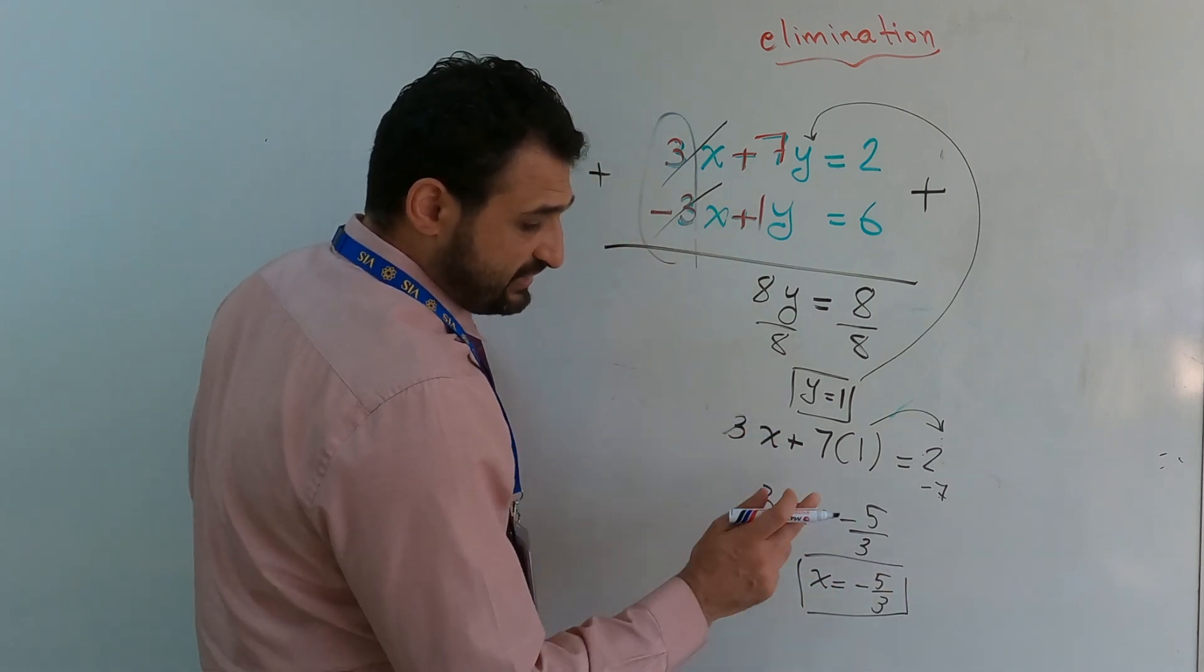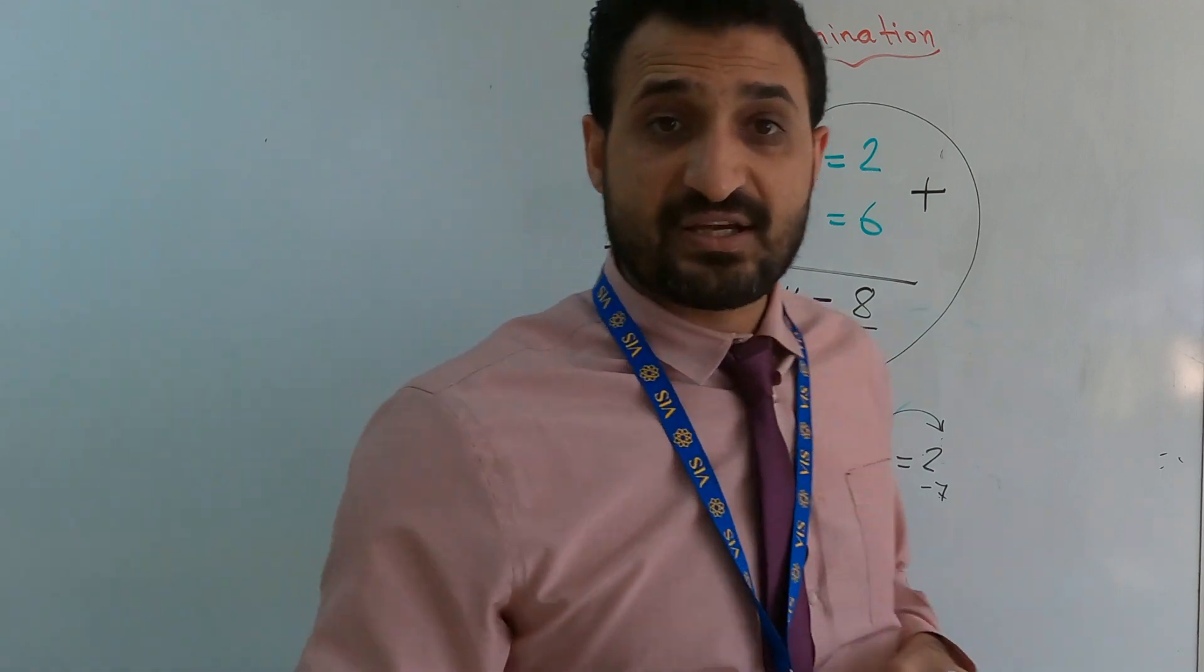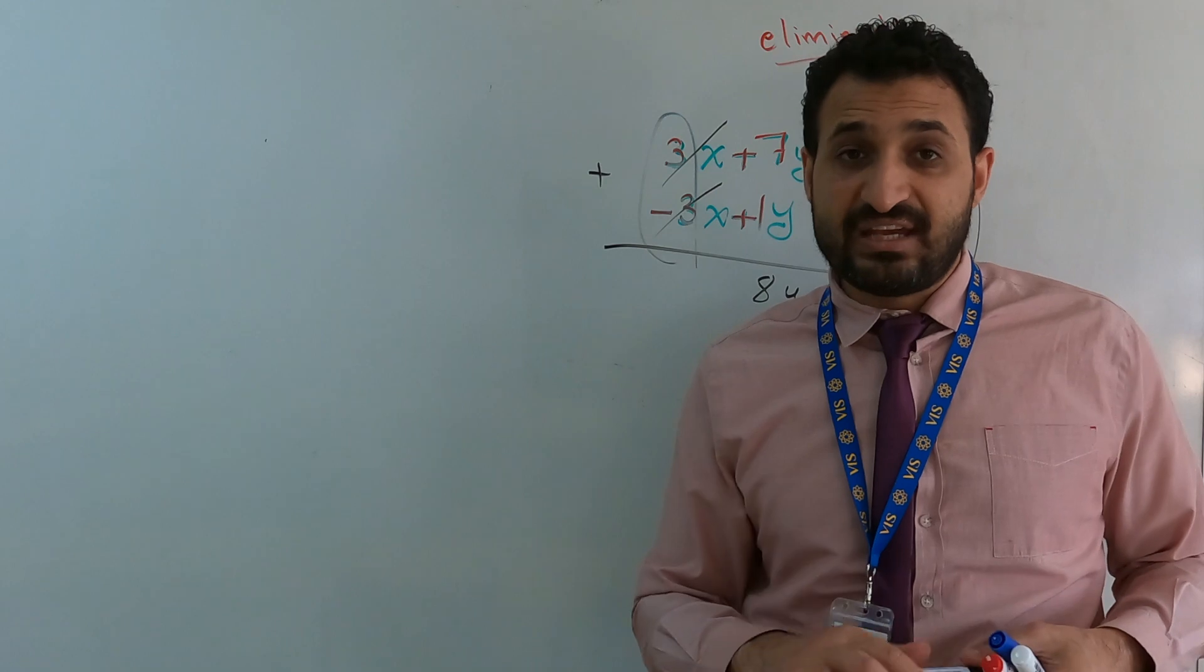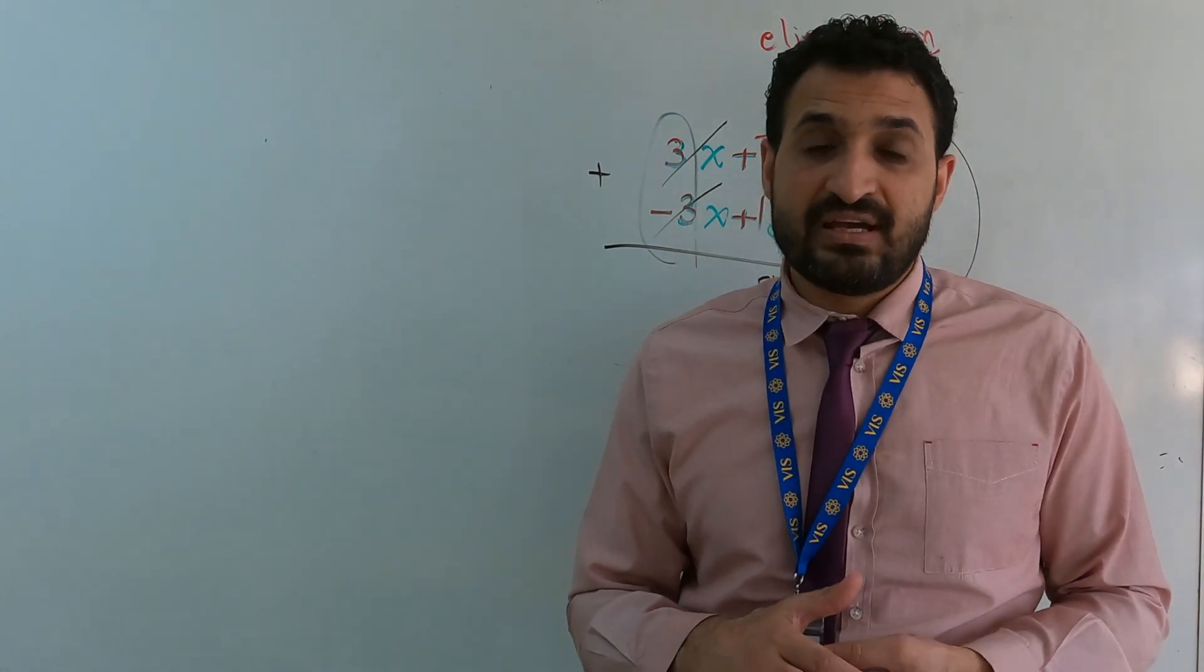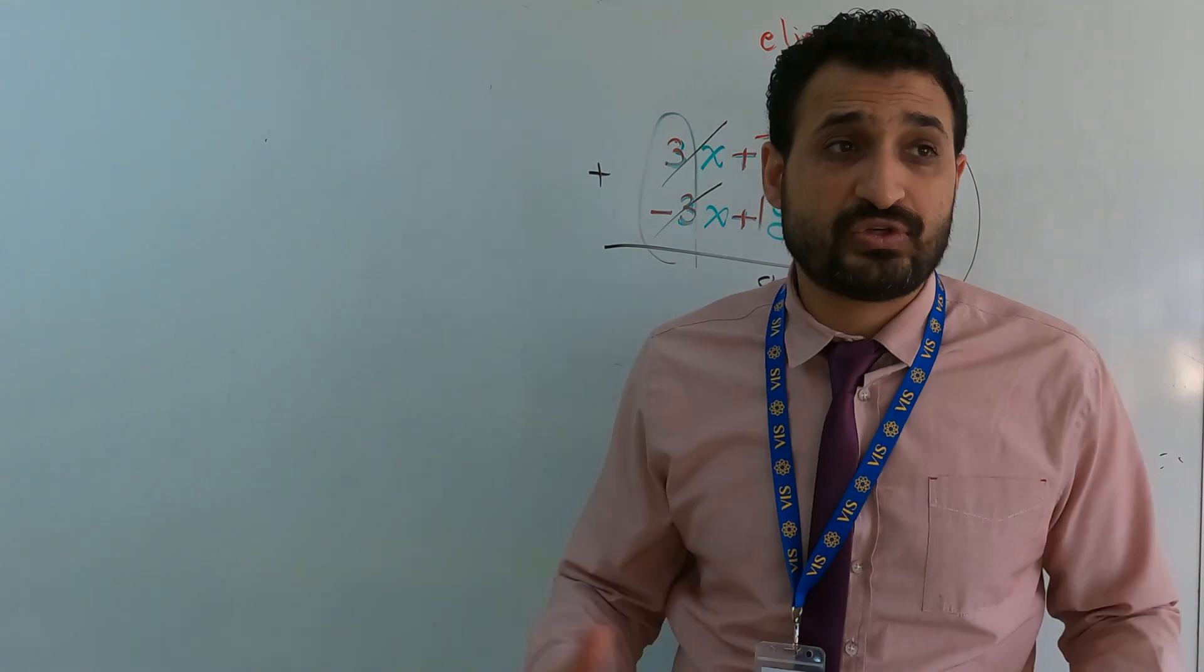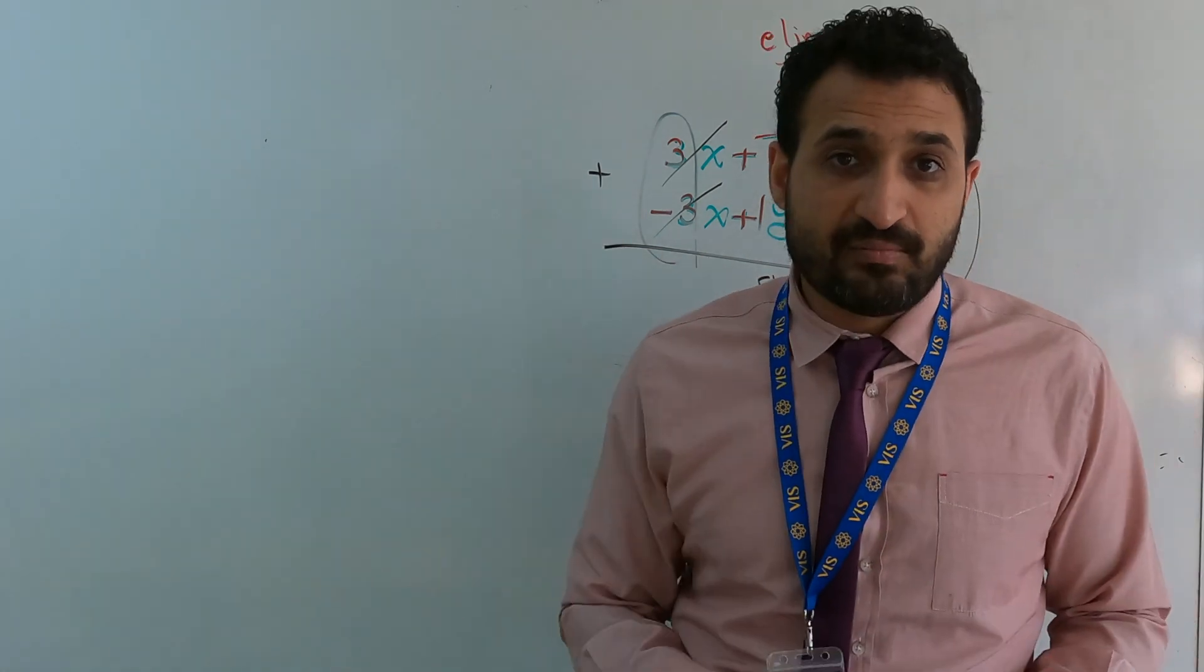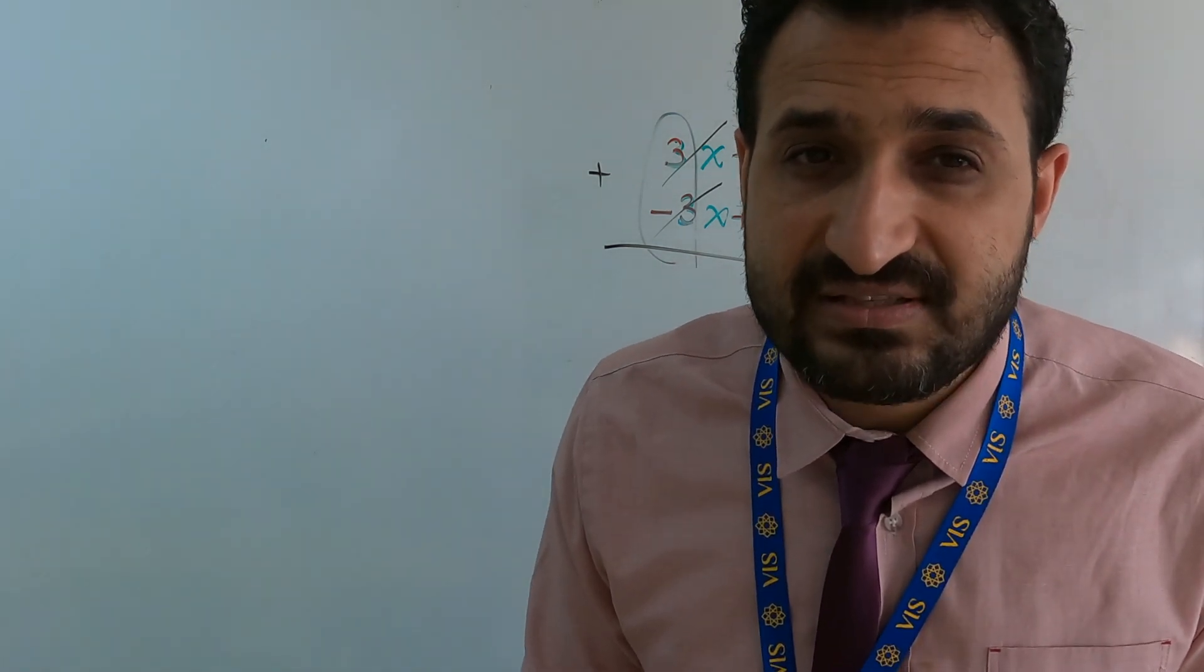So this is the solution: x is negative 5 over 3, y is 1. That's all, easy. Remember one thing in math: don't be afraid of fractions, don't be afraid of decimals. Decimals are numbers, fractions are numbers, zero is a number. Don't just say 'no solution' or 'oh teacher, we are used to seeing just whole numbers like 3 and 2.' What's the problem if you get negative 5 over 3?